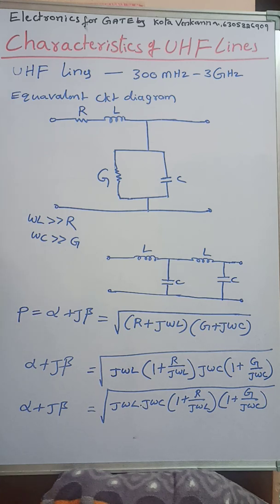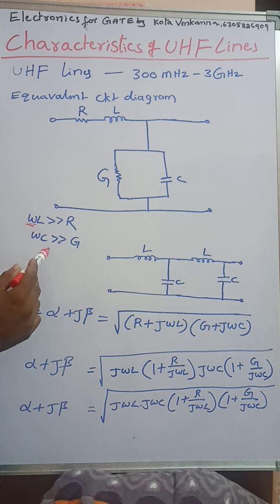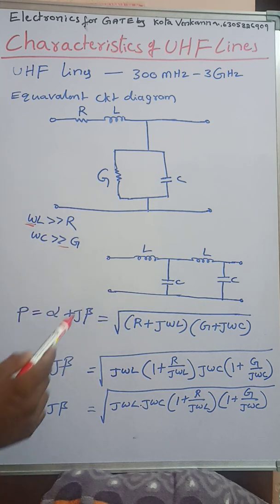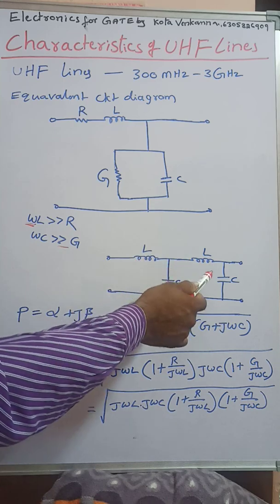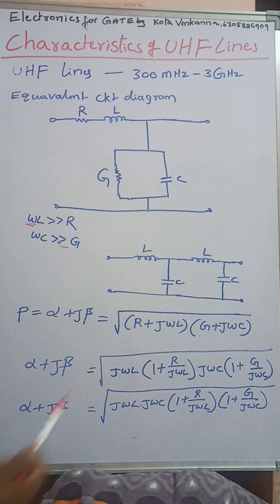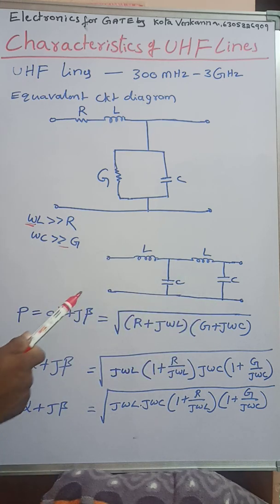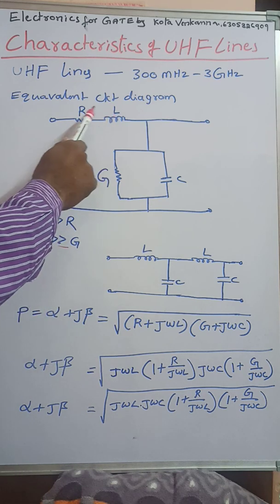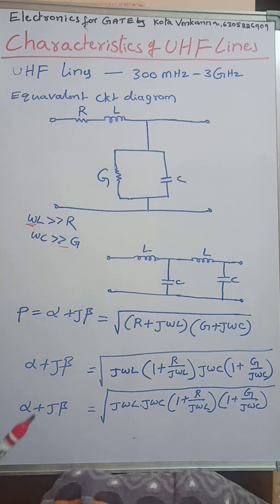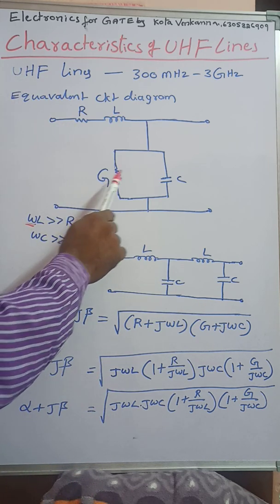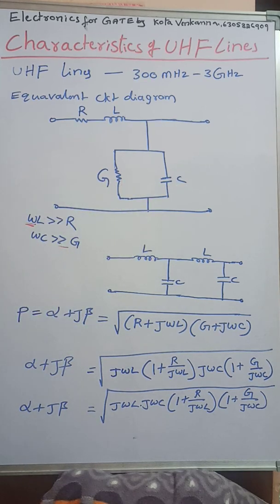So the resultant equivalent circuit diagram for UHF lines becomes L in parallel with C. This is because omega·L is very much greater than R, so R is neglected. And omega·C is very much greater than G, so G is also neglected.